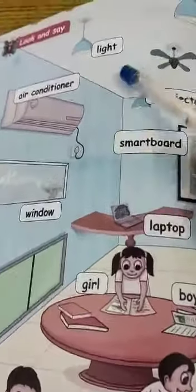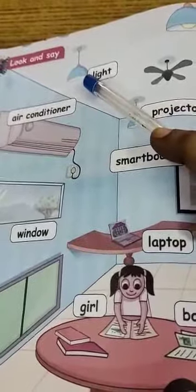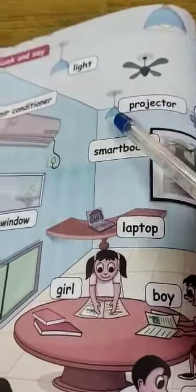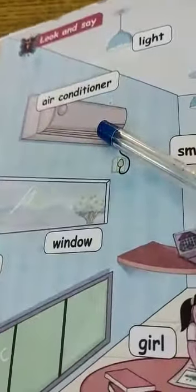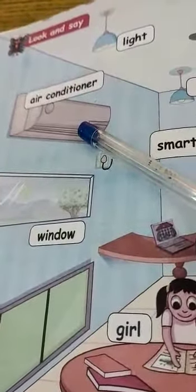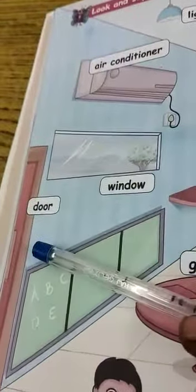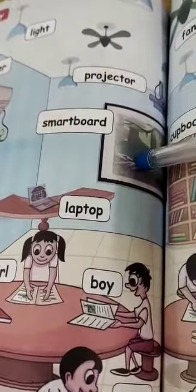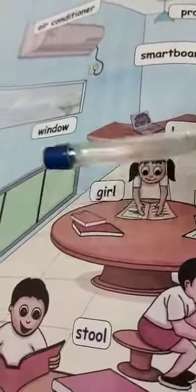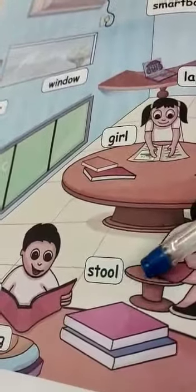Just look here — what is this? All of you look and say: light. Yes, this is a projector. This is AC — you should not say AC, say air conditioner. This is a window and this is a door. This is a smart board. This is a laptop. Here you can see a girl and a boy reading a book. Here it is a stool.